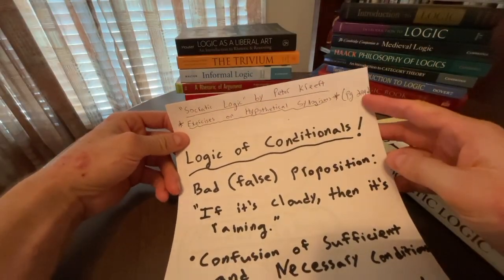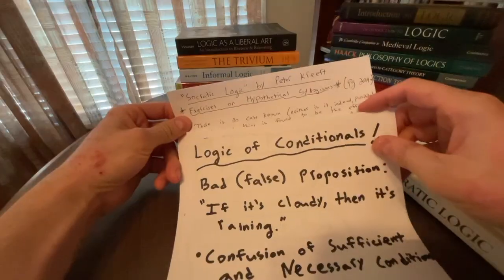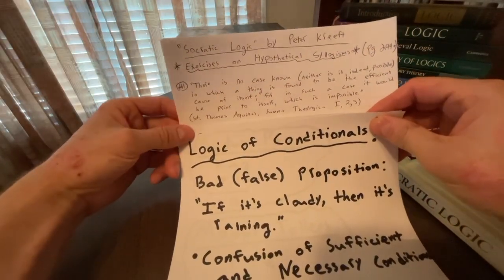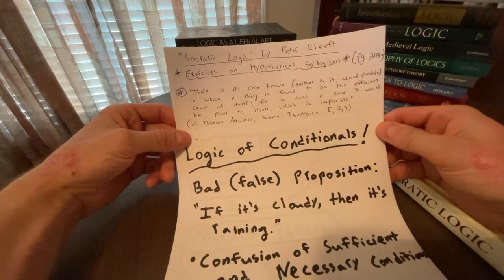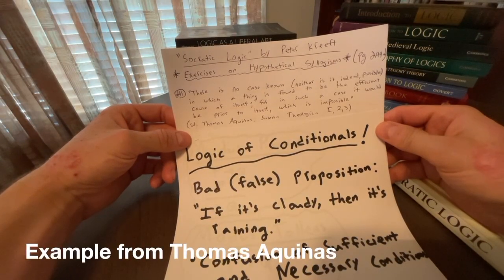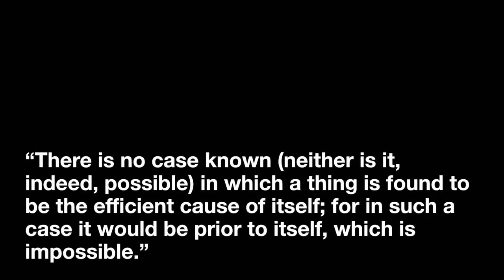So now we're going to jump into the exercises from the textbook from Peter Kreeft. And again, I think they're really interesting and good. So let's do this. So the first one is, so the first exercise argument, number one, there is no case known, neither is it indeed possible, in which a thing is found to be the efficient cause of itself.